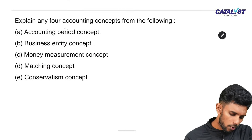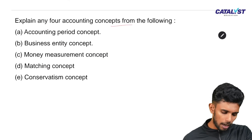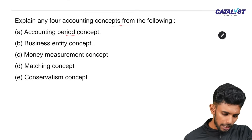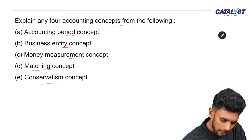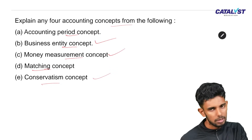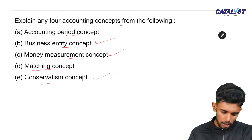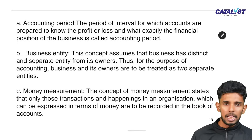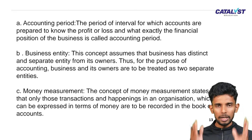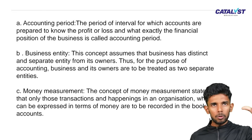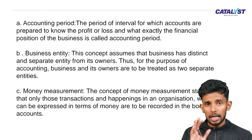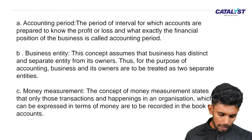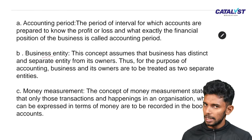Now, accounting concepts: there are four important concepts — the period concept, entity concept, money measurement concept, matching concept, and conservatism. The business entity concept and money measurement concept are also very important. The period concept means we record transactions in one particular accounting period, such as April to March.